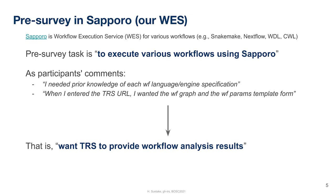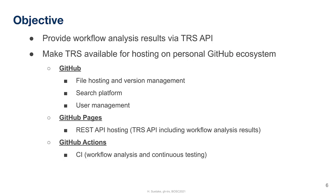The workflow analysis results here refer to the workflow parameter templates and workflow graphs. To summarize our goals: the first goal is to provide the workflow analysis results via the TRS API. The second goal is to make the TRS API available for hosting on a personal GitHub. Currently, GitHub has the features GitHub Pages and GitHub Actions, and by combining these features, we can achieve the requirements of TRS and its platform.